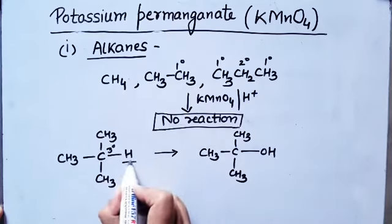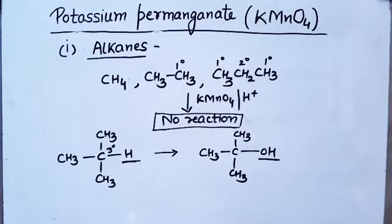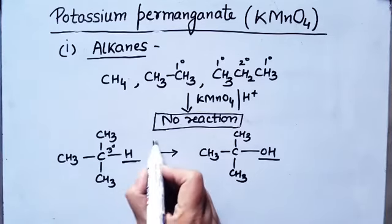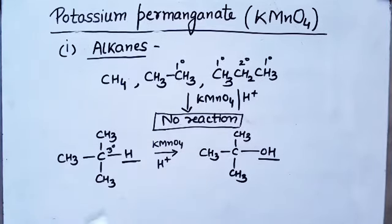That H will change into OH — you will get tertiary butyl alcohol. So, in alkanes with primary and secondary hydrogen atoms, KMnO₄ has no action. But if the hydrogen is tertiary, the reaction with KMnO₄ occurs in acidic medium and you will get tertiary butyl alcohol — simply replace H with OH.